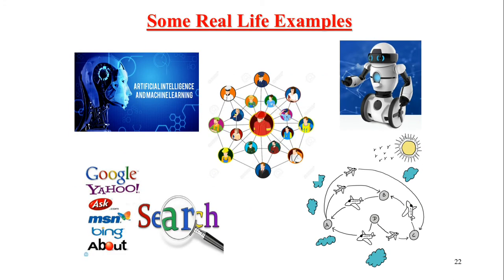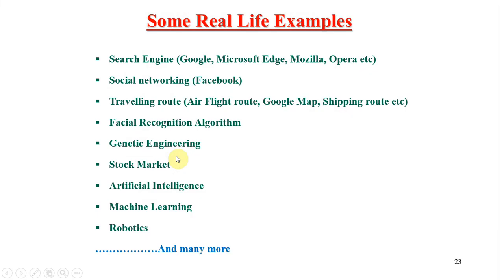Let's see a few real-life examples. First of all, artificial intelligence and machine learning algorithms are used. This algorithm is used in social media, robotics, air navigation systems, and data search engines like Google, Yahoo, and Ask.com. This algorithm also shows how genetic engineering algorithms, stock market, and face recognition systems use algorithms.